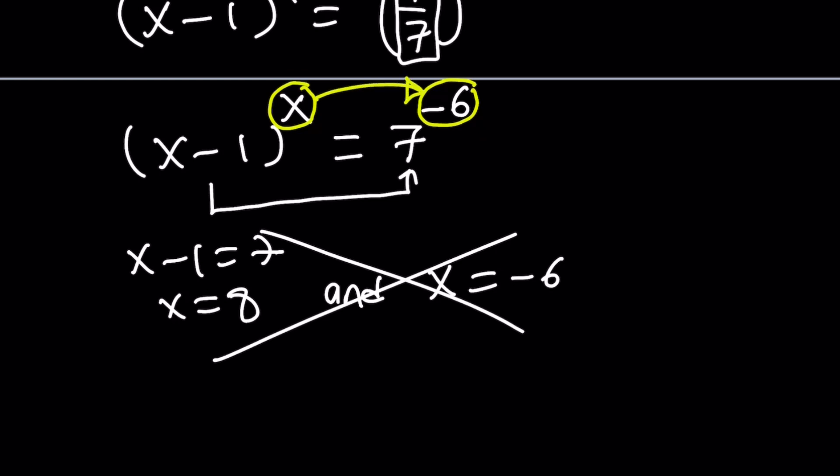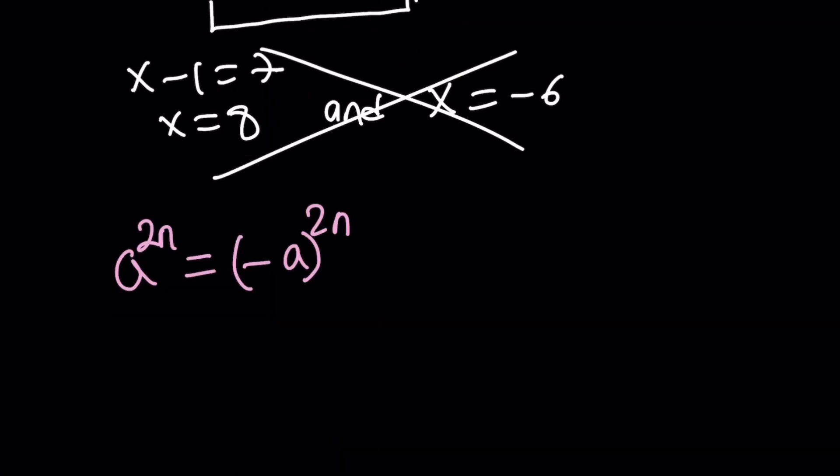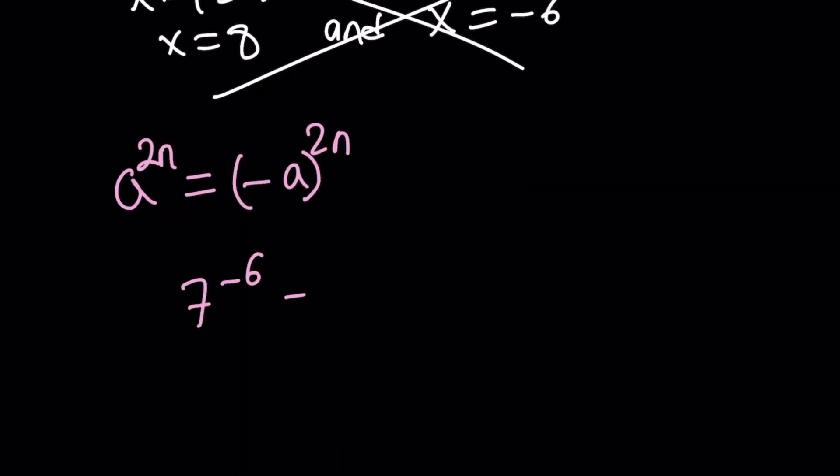But then I change the 7. And I can change the 7 because the exponent is even. So what do you know? If you have a to the power 2n, it is the same thing as negative a to the power 2n. And negative 6 is an even number.